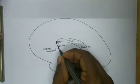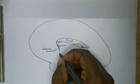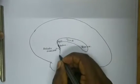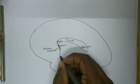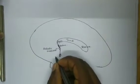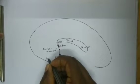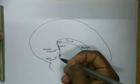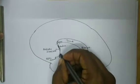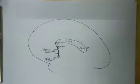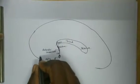Below the anterior commissure we have white matter — a white fiber which is extending downwards and ending in the optic chiasma. This white fiber is called the lamina terminalis.